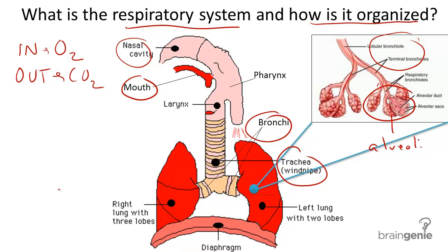In addition, we have a muscle called the diaphragm. And these alveoli make up two lobed structures called the lungs.